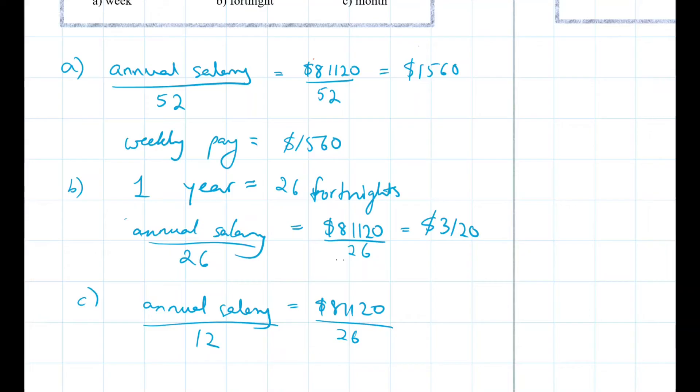Oops, divided by 12. That's going to be 6760 every month. This is every fortnight. Alright.